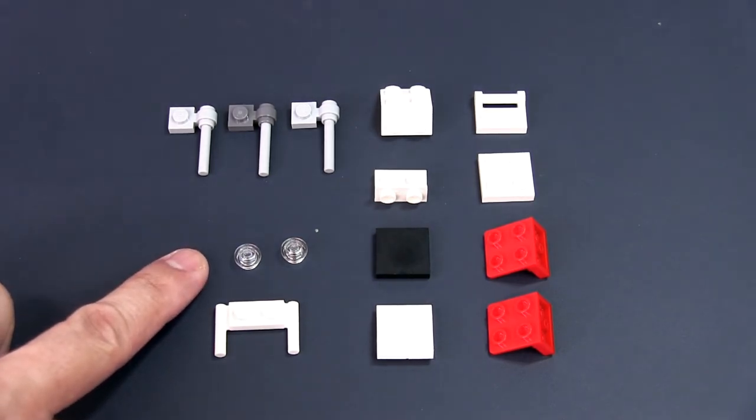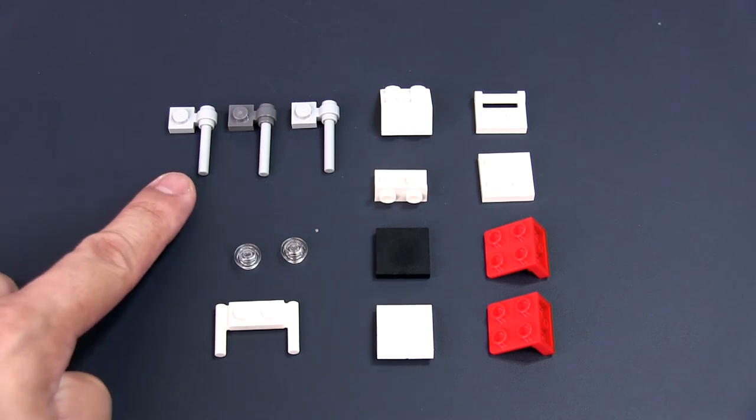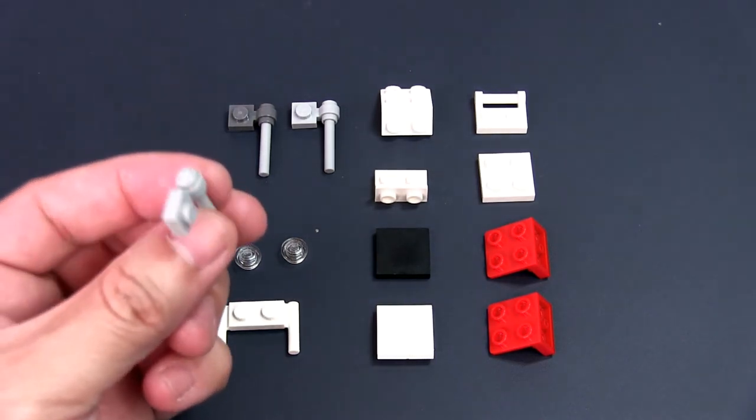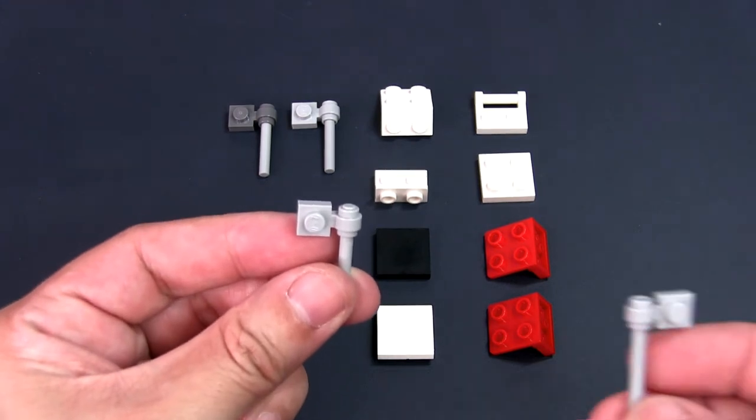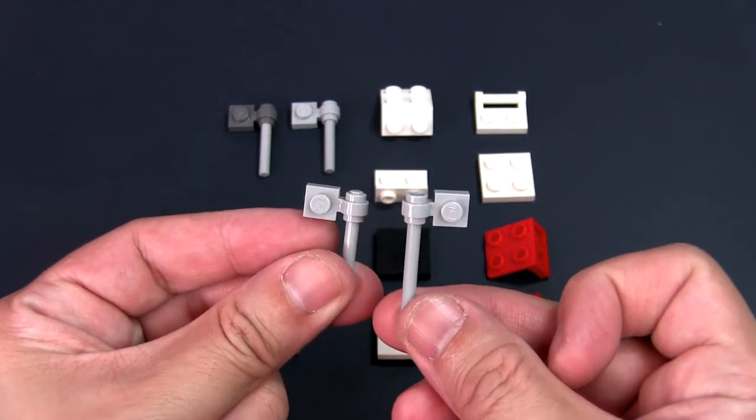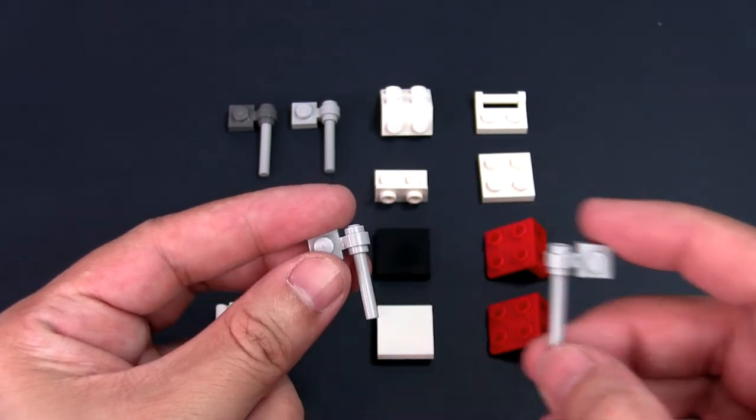Two transparent round studs, and three golf clubs made from bar elements and modified plates with holders. Notice that these bars are slightly shorter than the bar used for the golf stick that the minifig holds.